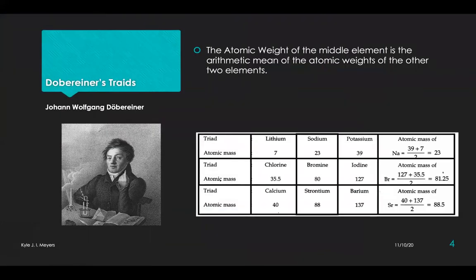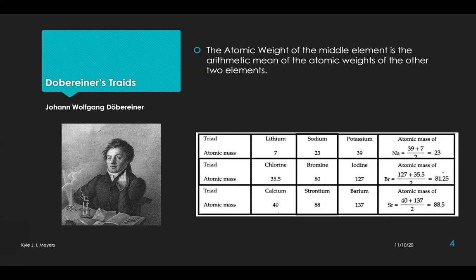The first, in 1829, German scientist Döbereiner was able to identify several groups of three elements that showed similarity in the physical and chemical properties. He observed that in a set of three elements having similar properties, so-called triads, the atomic weight of the middle element is the arithmetic mean of the atomic weights of the other two elements. For example, we have the atomic masses of lithium, sodium, and potassium. If you look at sodium, who has an atomic mass number 23, and lithium 7 and potassium 39, when we take the average of 7 and 39, we get the atomic mass number of sodium.